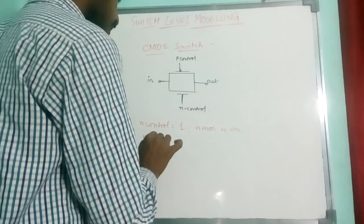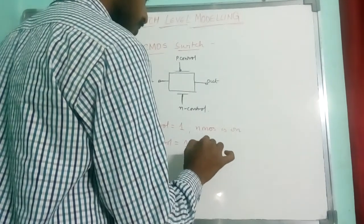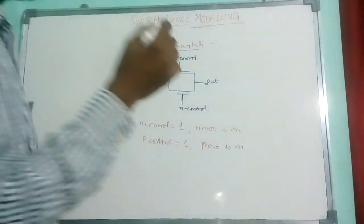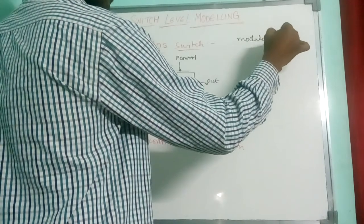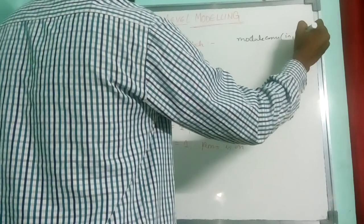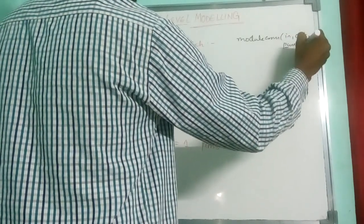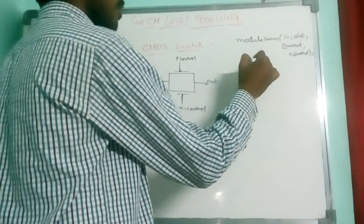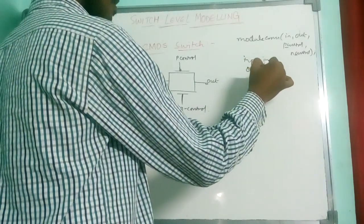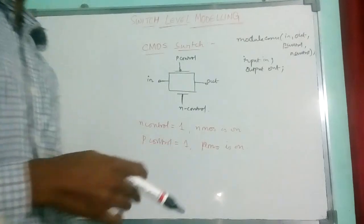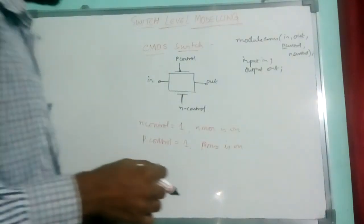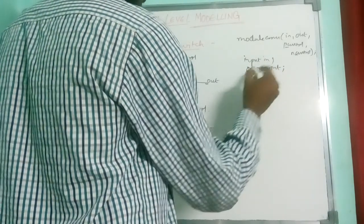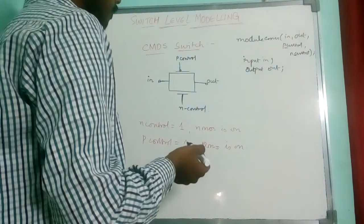Whenever P control is 1, PMOS is on. Now for this, if we write the code, here we have input, output, and other two variables P control and N control. Now give the names: input IN, output OUT.